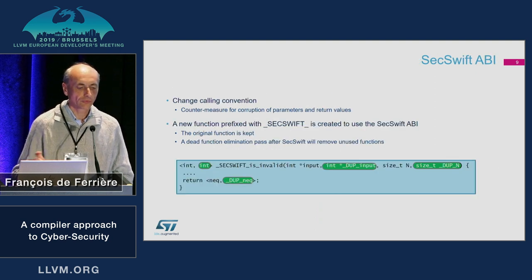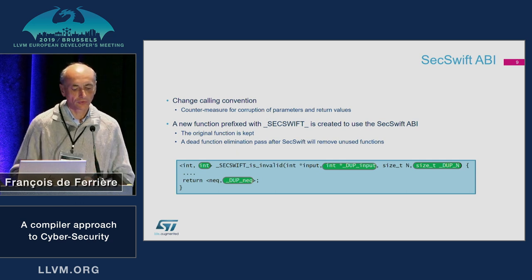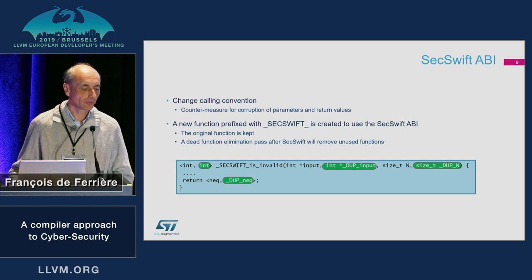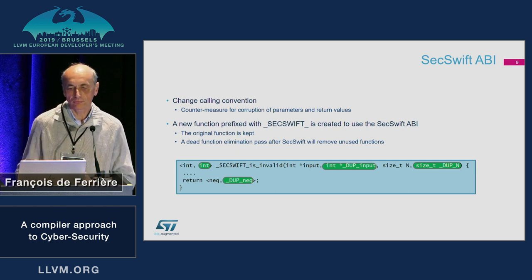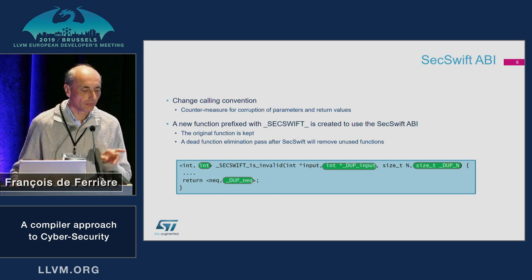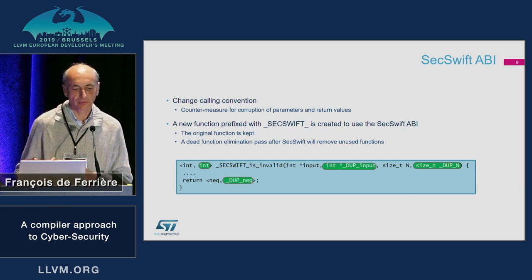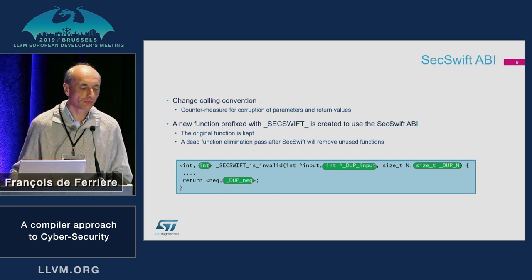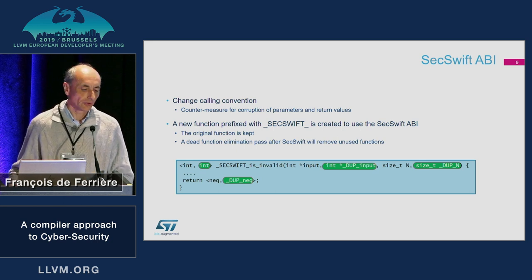The second part is the modification of the API: we duplicate the parameters and also duplicate the return value. To do this, we create a new function with the name prefixed with SecSwift. At the end of the SecSwift passes, we run a dead code function elimination to remove functions which are never called.